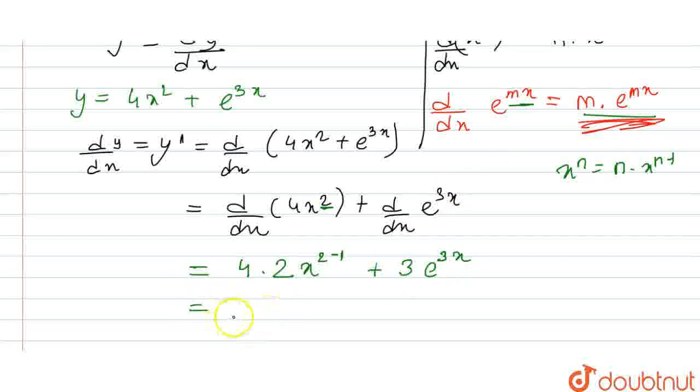This is equal to 4 times 2 is 8, times x to the power of 2 minus 1, which is 1. And we know x to the power of 1 is nothing but x. Plus 3e to the power of 3x. This will be the final answer: 8x plus 3e to the power of 3x. Thank you.